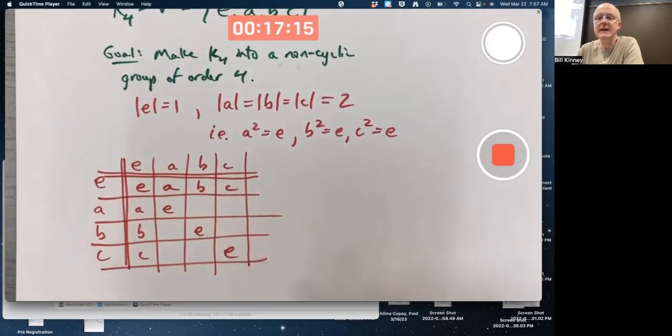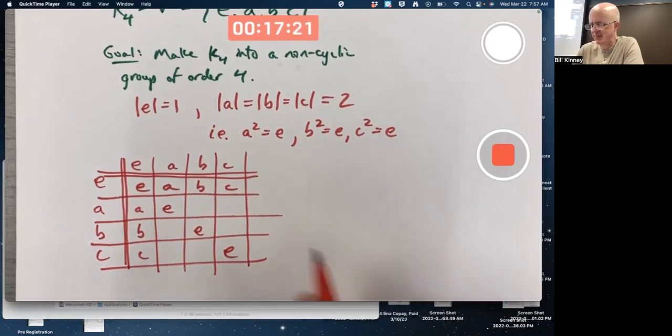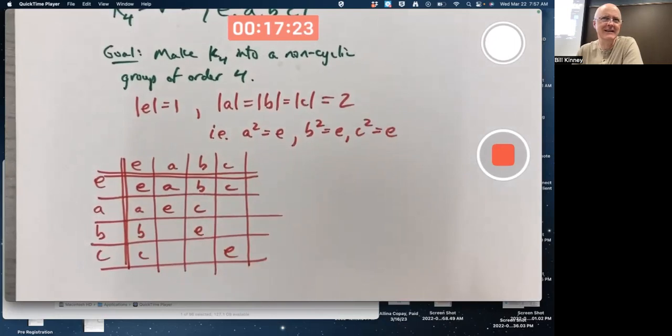What would A times B be? Well, I would hope it makes intuitive sense that it probably better be C. Why? Could you give an argument why it couldn't be A or B or E?